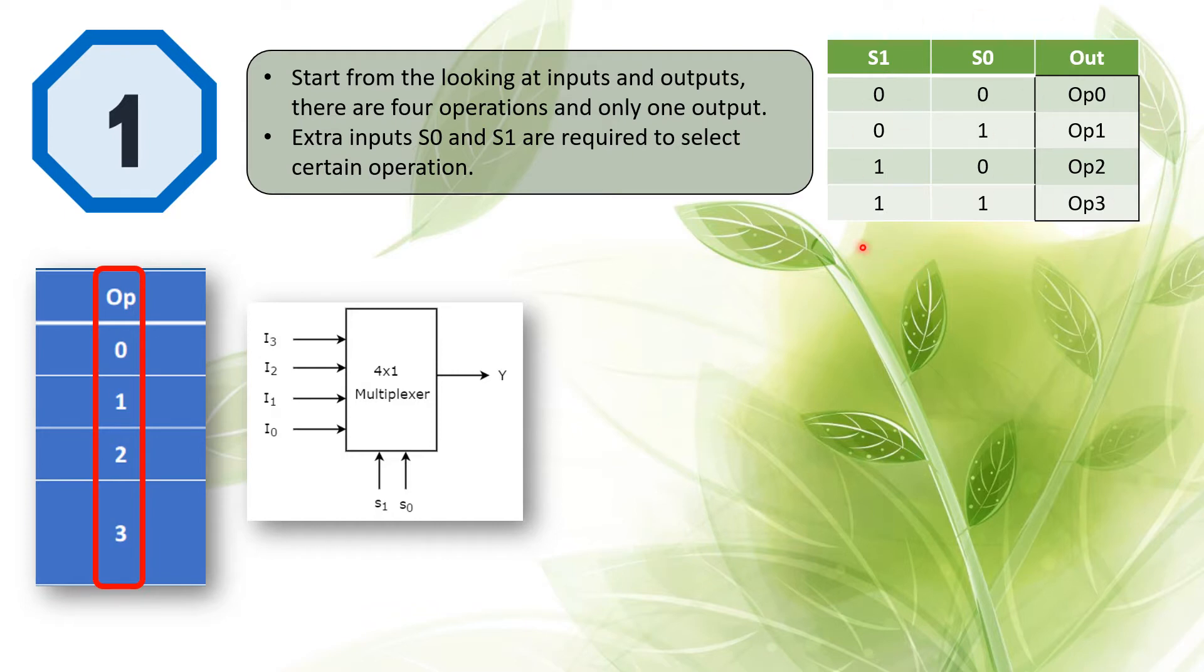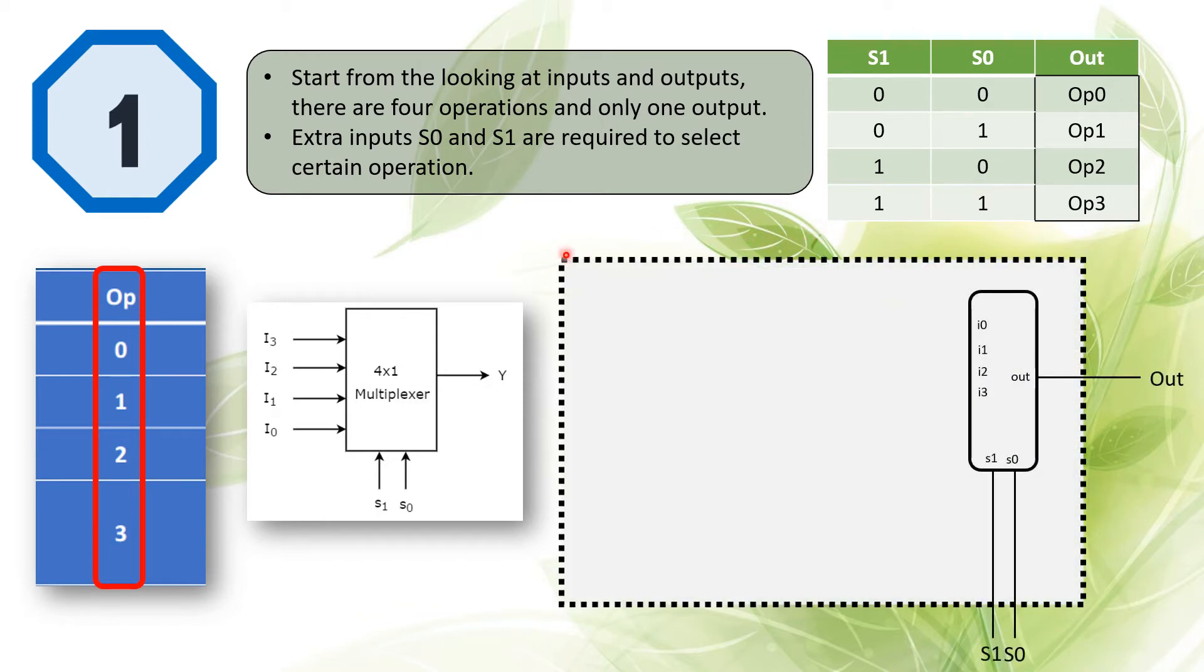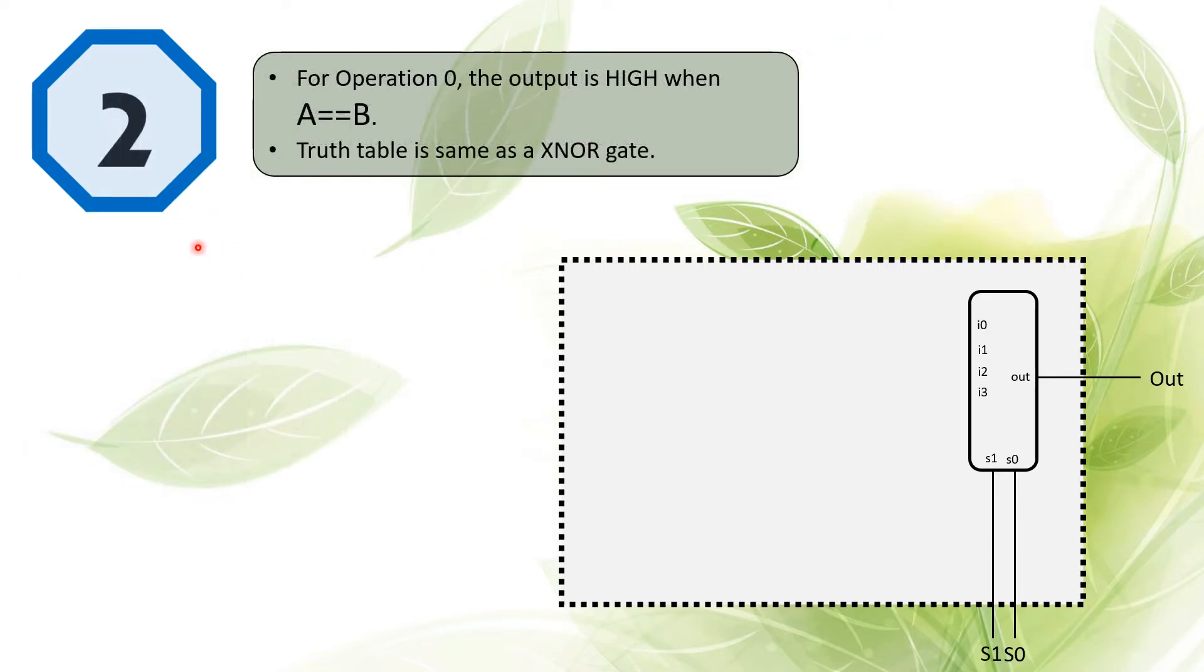Each operation will be assigned to a certain signal of S0 and S1. So we start to design the ALU by drawing something like this. This is our four-to-one multiplexer.